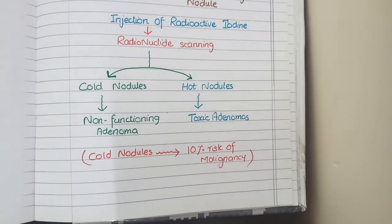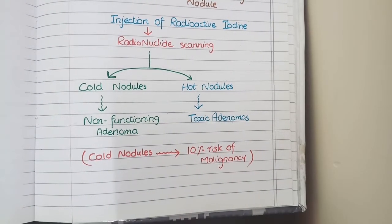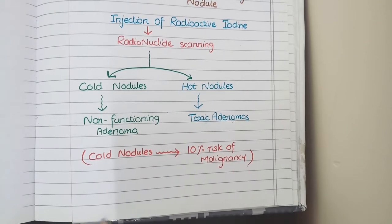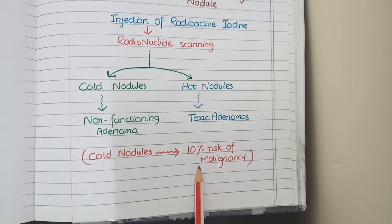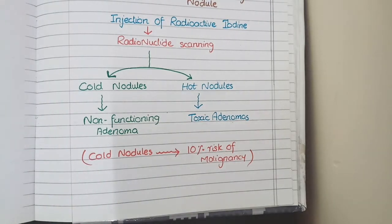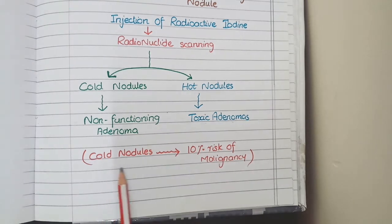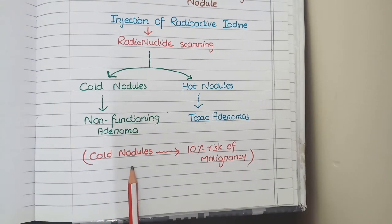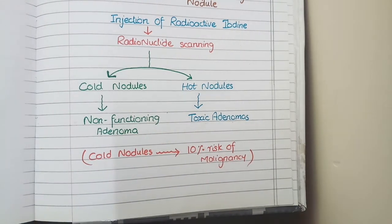The significance of this classification is that cold nodules carry a small 10% risk of malignancy, while hot nodules carry no risk of malignancy. Therefore, a cold nodule needs to be removed from the body because it can become cancerous.